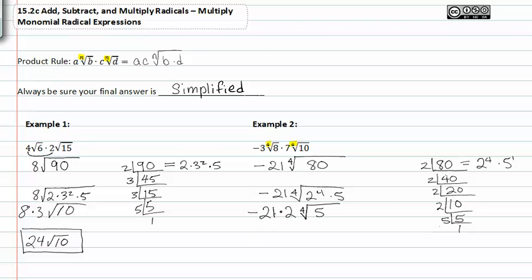Negative twenty-one times two is negative forty-two, and I'm left with fourth root of five.